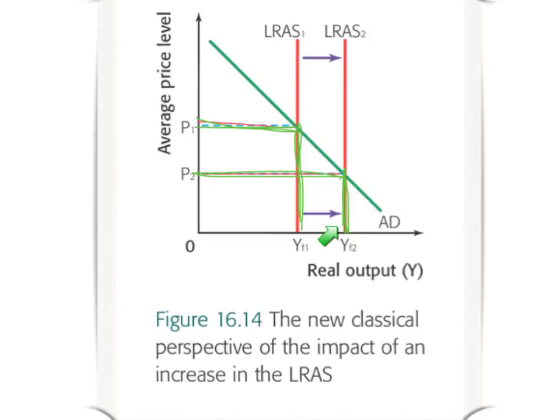But from the Keynesian model, you can see that this wouldn't be true. That is the big difference between the shift factors from both the Keynesian perspective and the neoclassical perspective. I hope you found this video helpful — a look at the changes in the long-run aggregate supply curve in both the neoclassical and Keynesian view. Talk to you in a bit.